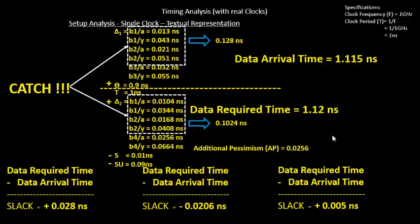AP is the most important factor that often gets neglected due to human error or missed settings. It is a critical factor that must be accounted for in setup or hold timing analysis. The reason is simple: it helps your slack become positive — still 5 ps positive by a marginal number, but positive. This means the circuit still has the potential to work at 1 GHz. This term can also be called clock path pessimism, since most of the pessimism is removed from the clock path.